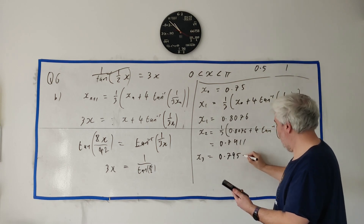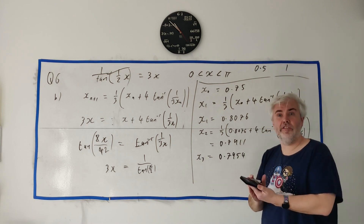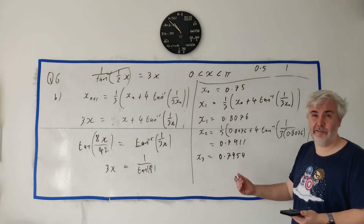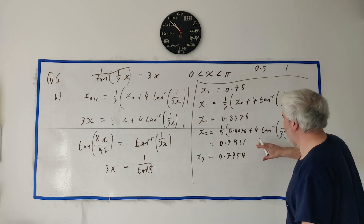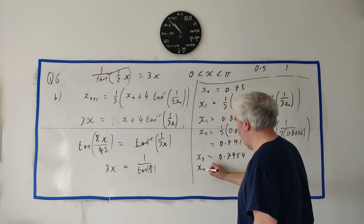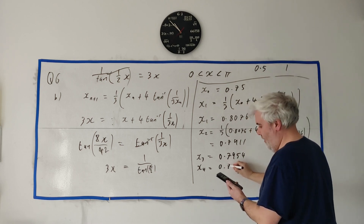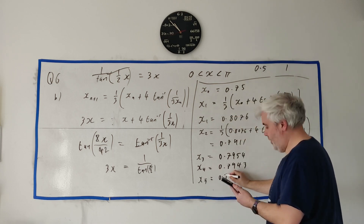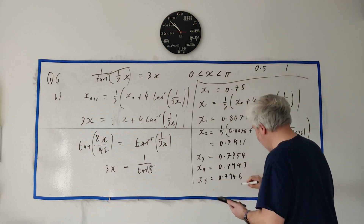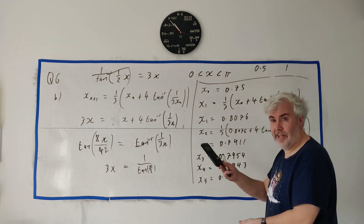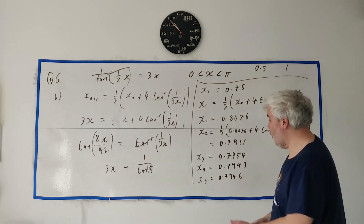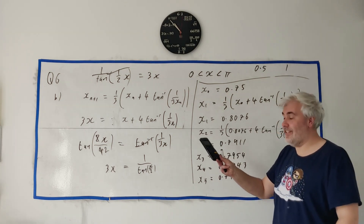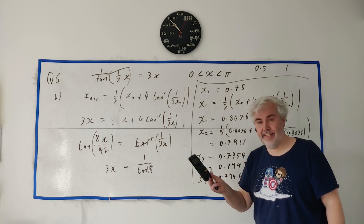Continuing: x₄ = 0.7943 and x₅ = 0.7946. The great thing about the calculator is I can just press equals ten times and quickly get to x₁₅, getting as exact an answer as the calculator will give — about ten decimal places.